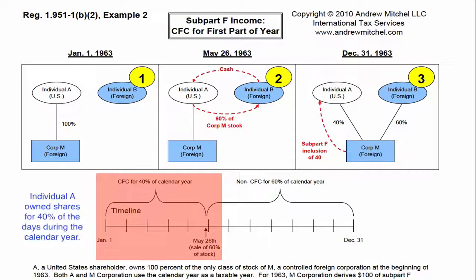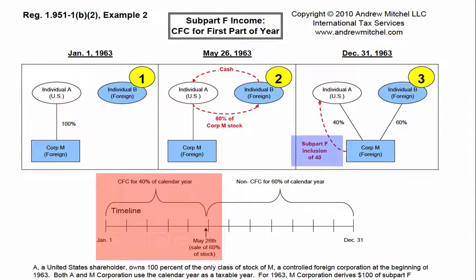Since Individual A owned the shares of Corp. M for 40% of the days during the calendar year, A's pro-rata share of the Subpart F income is 40%, and A must include $40 of Subpart F income in her income for 1963.